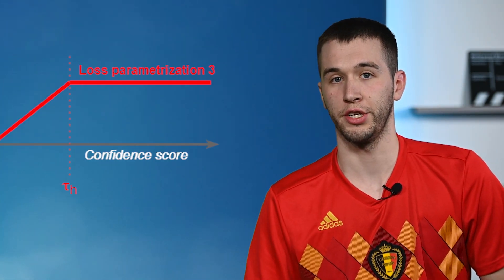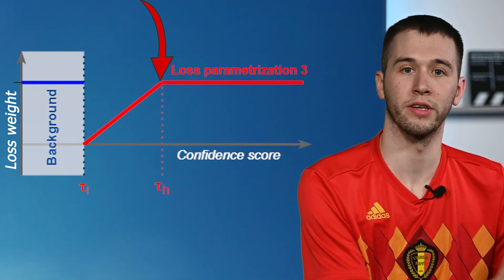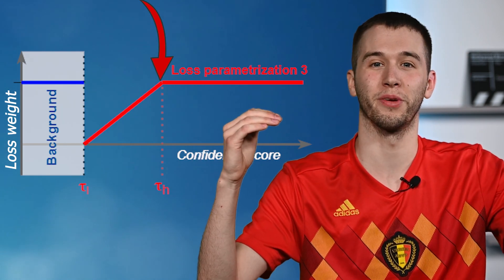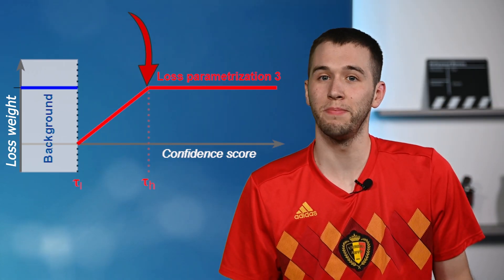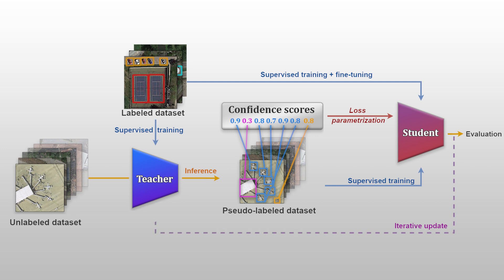Finally, we propose a third strategy that gives progressively more and more importance to predictions with a higher confidence score. This is all very intuitive — the higher the confidence score, the higher we should trust the predictions. In practice, this may be done by multiplying the training loss by a factor that depends on the confidence score. Now, if we get back to the pipeline, we can iterate several times the whole process. The student can become the new teacher and will now produce new and better pseudo-annotations on the raw data, and a new student can be trained on those new annotations and achieve even higher performances.